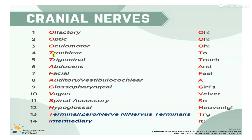Look at the first letter of each nerve. Trochlear nerve starts with T — that is 'To' in the mnemonic. Then Trigeminal, which means 'Touch.' Then Abducens and Facial nerve — Facial also comes under the category of cranial nerves, so Facial means 'Feel.'